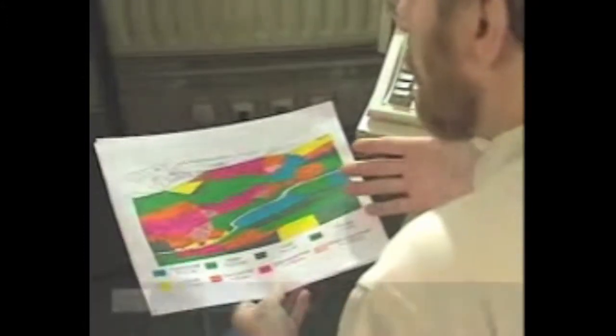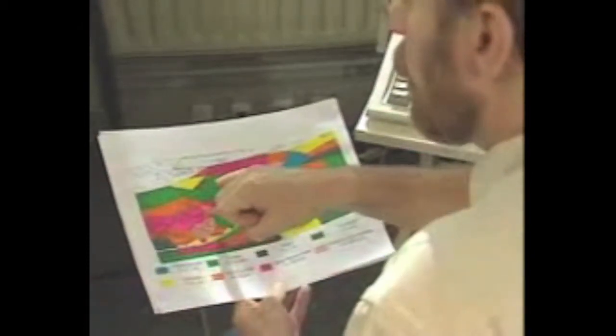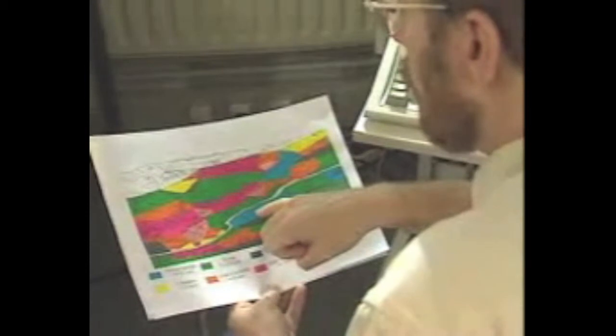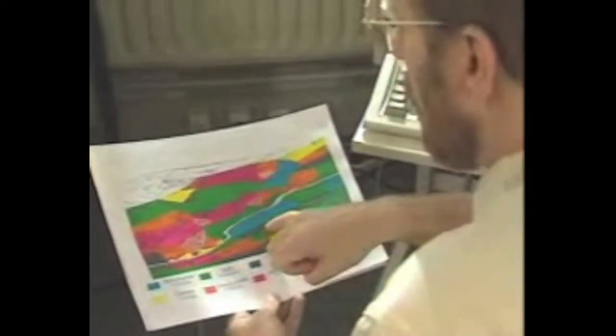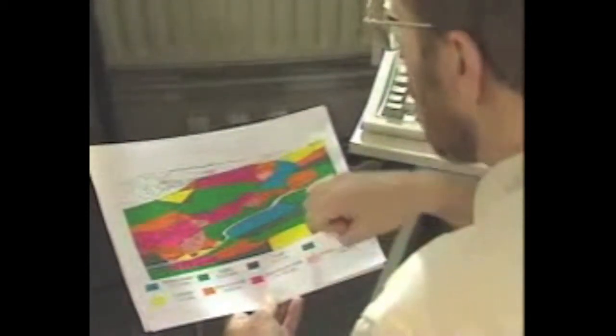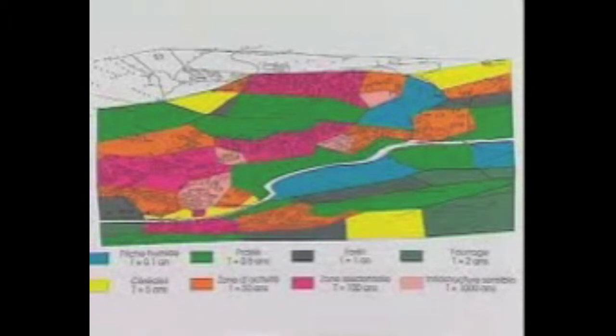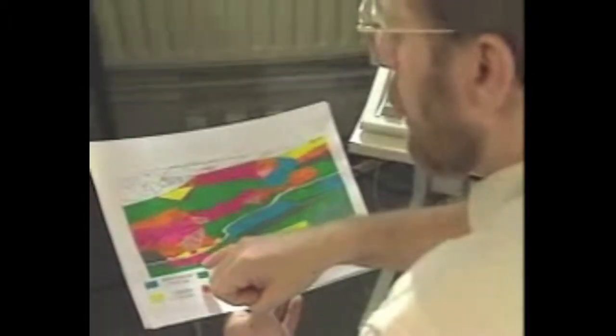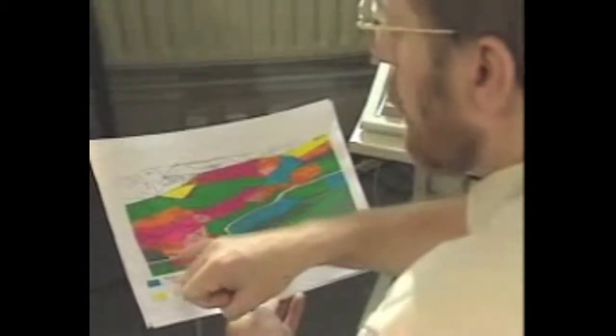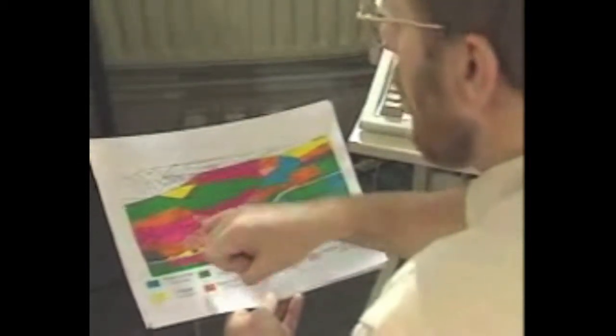La vulnérabilité aux inondations varie de façon importante selon l'utilisation des sols. Il y a une première carte qui représente l'occupation des sols et on voit bien apparaître pour chaque type d'occupation des sols une couleur différente. En particulier les friches en bleu, les zones de forêt, les zones de culture céréalière, culture de fourrage. Et puis dans les zones urbaines, on peut dissocier les zones résidentielles des zones d'activité ou des équipements sensibles.